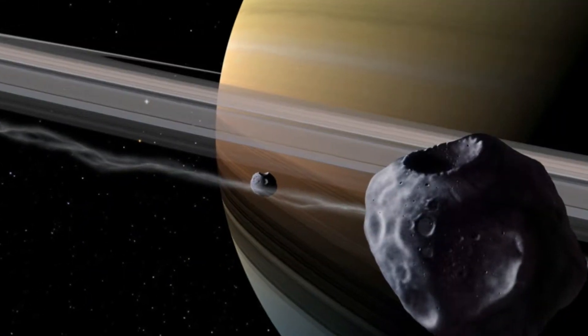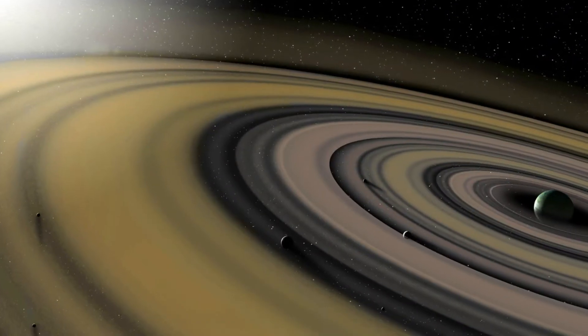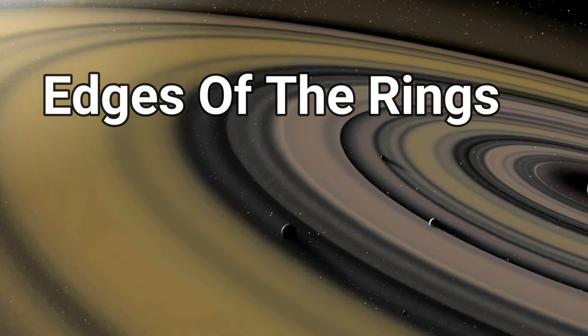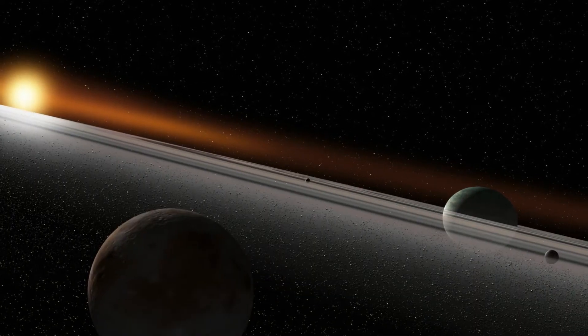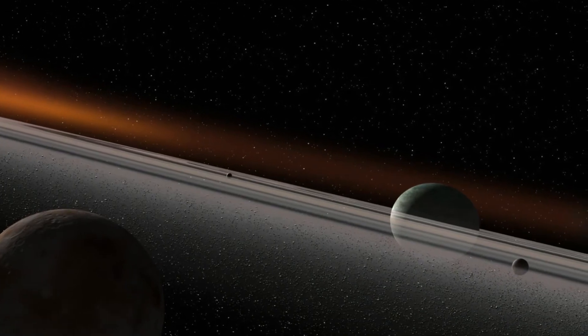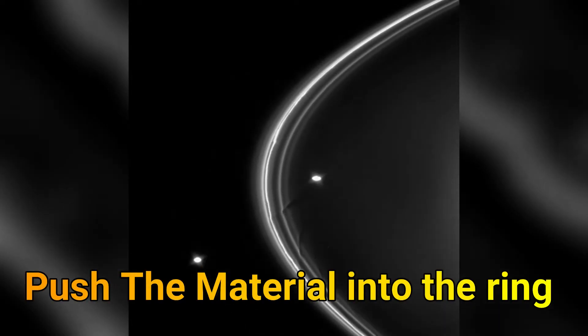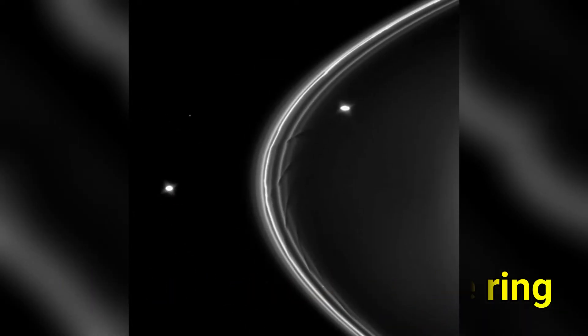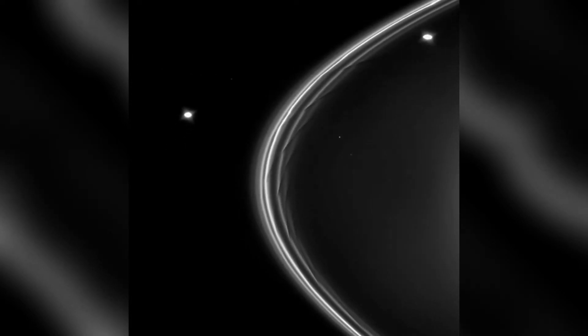It is partially believed to be caused by shepherd moons, which lie in orbit near the edges of the rings. These moons protect the ring material from leaving the system. The gravitational forces of these moons push the material into the ring when it tries to escape, or accrete the material onto the moon itself.